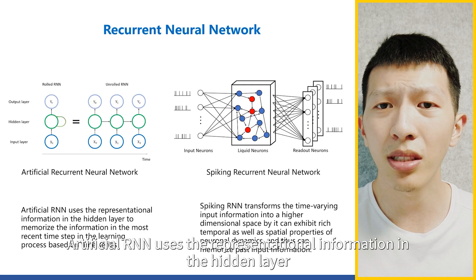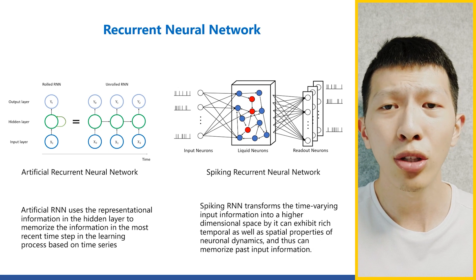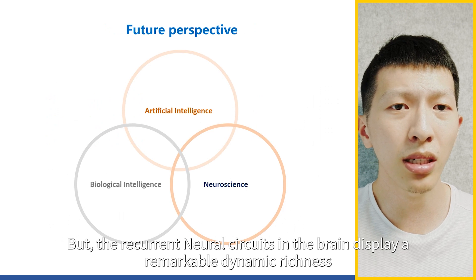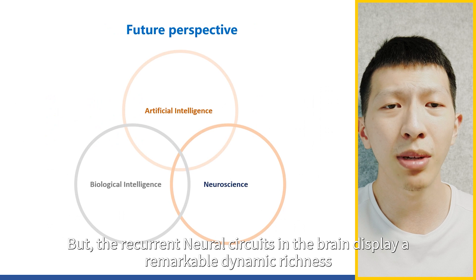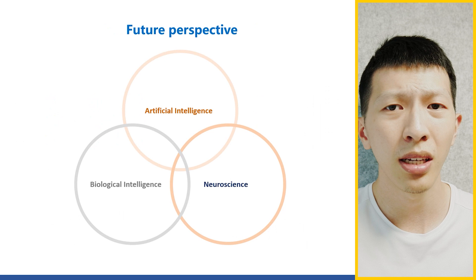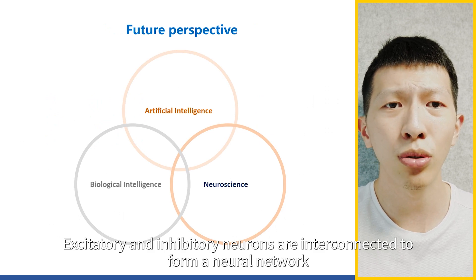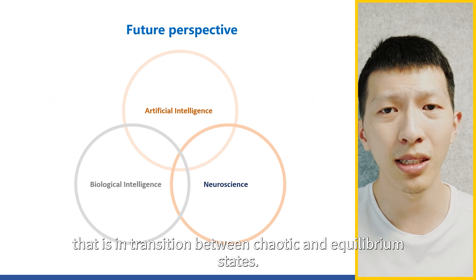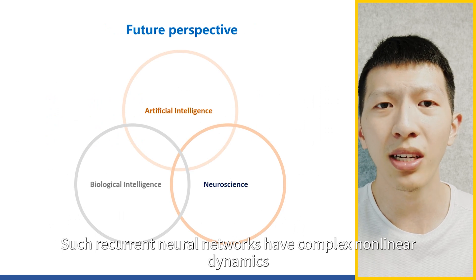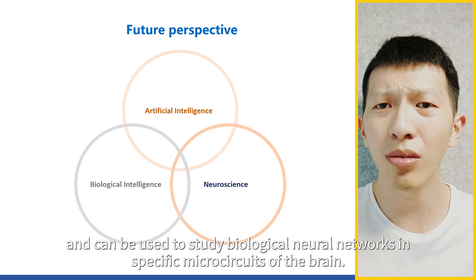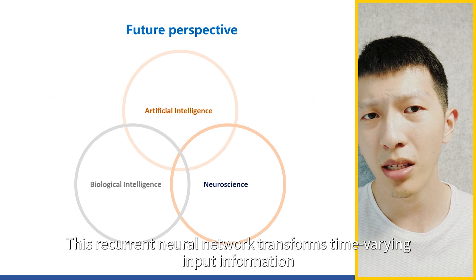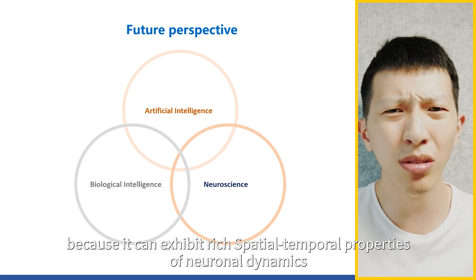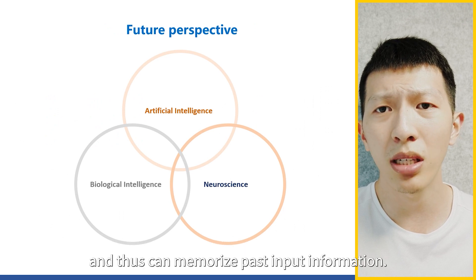Artificial recurrent neural networks use the representation information in the hidden layer to memorize information from the most recent time step in time-series learning. But recurrent neural circuits in the brain display remarkable dynamic richness and high variability in recurrent connections. Excitatory and inhibitory neurons interconnect to form networks that transition between chaotic and equilibrium states. Such recurrent neural networks have complex nonlinear dynamics and can be used to study biological neural networks in specific microcircuits of the brain, transforming time-varying input into a higher-dimensional space with rich spatiotemporal properties.